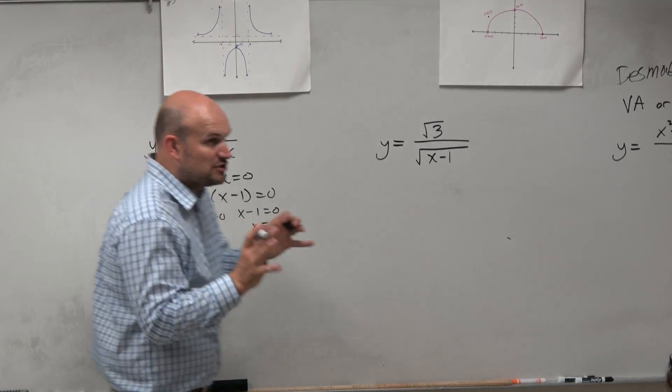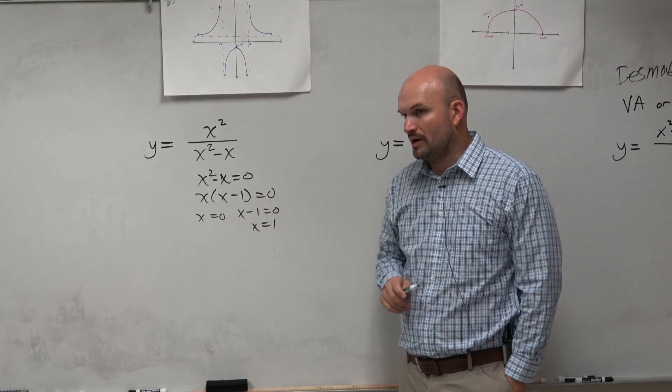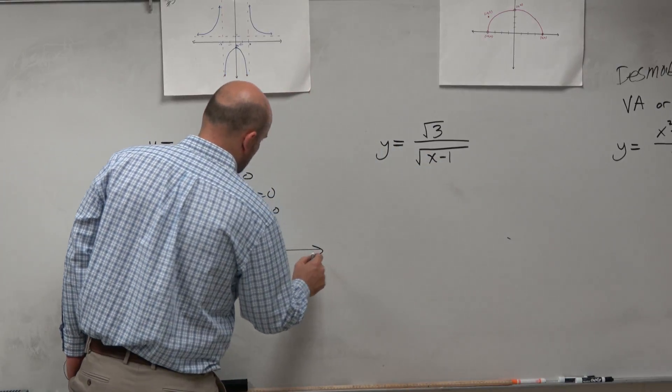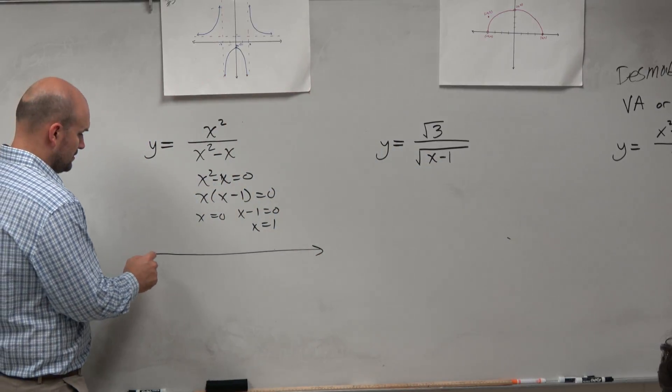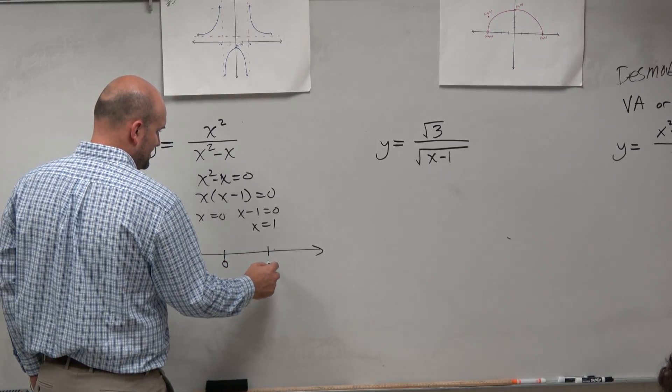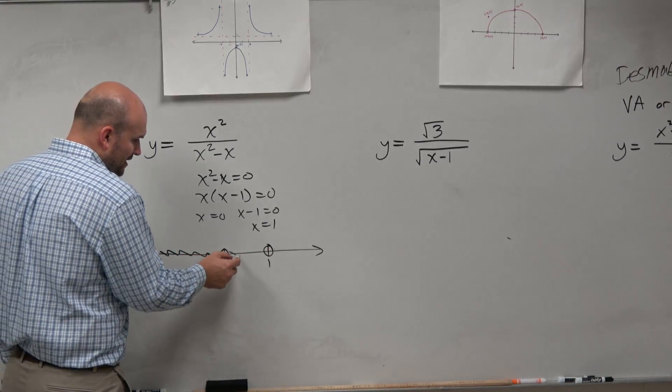So x equals 0 and x equals 1. So that means my function is defined for all numbers except 0 and 1. Now, for this one, I'm going to graph the number line just so I can visually understand this one or see it. So it's undefined there and it's undefined there. However, everything else, we're good.